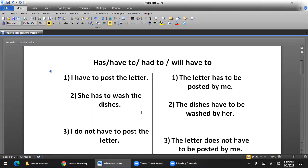Now the second sentence: 'She has to wash the dishes.' The dishes is a plural noun, so when we make it the subject in passive voice, we use have to. Remember, after has to, have to, had to, or will have to, we always add 'be' in passive voice. So the transformation is: 'The dishes have to be washed by her.'